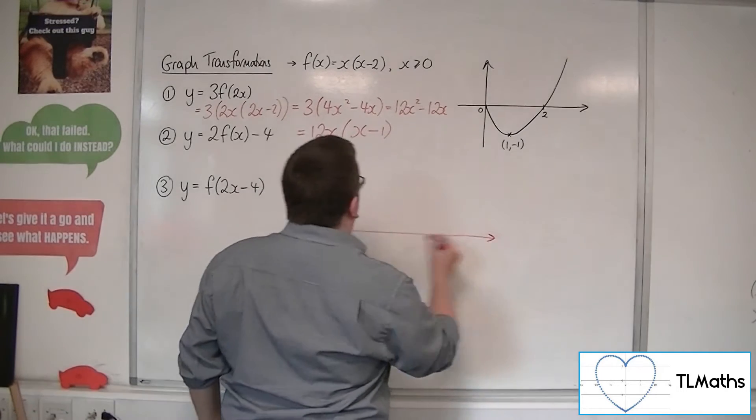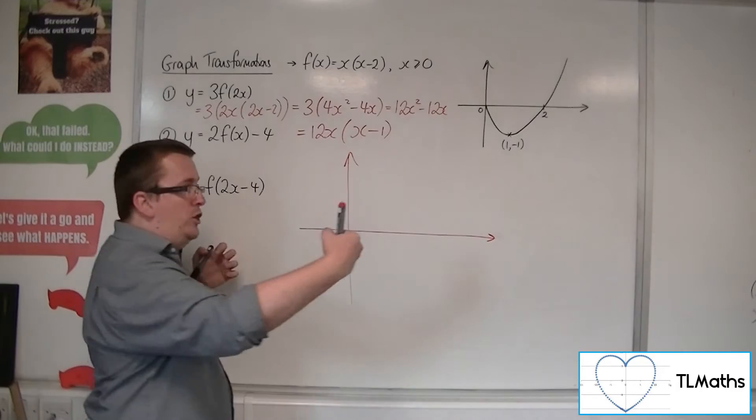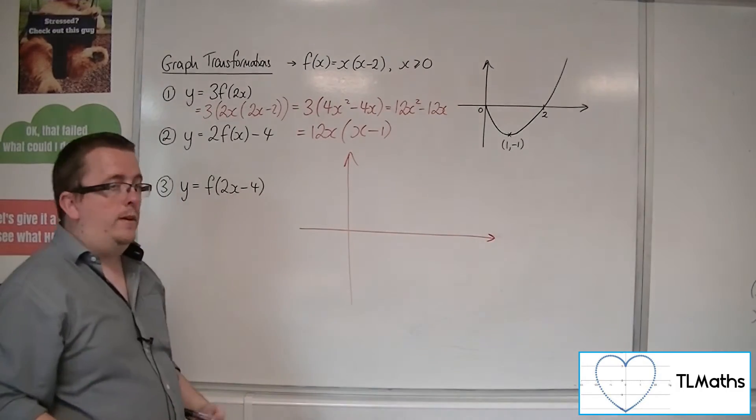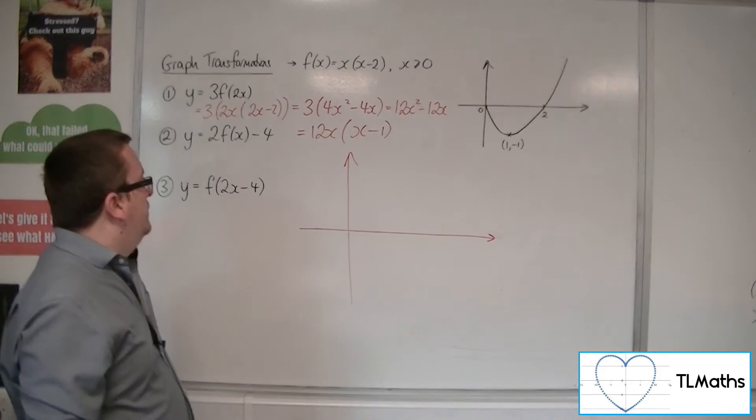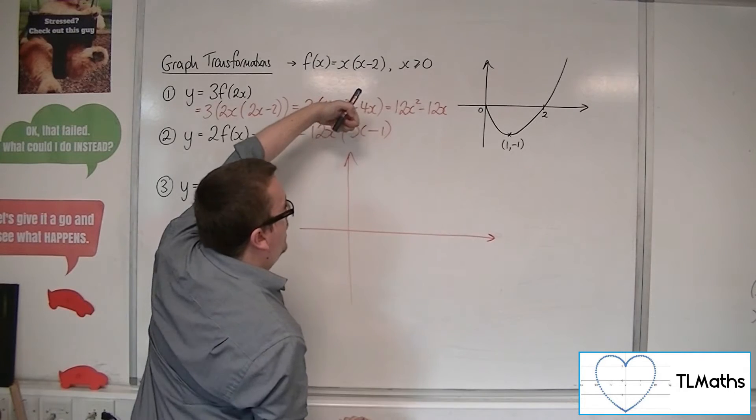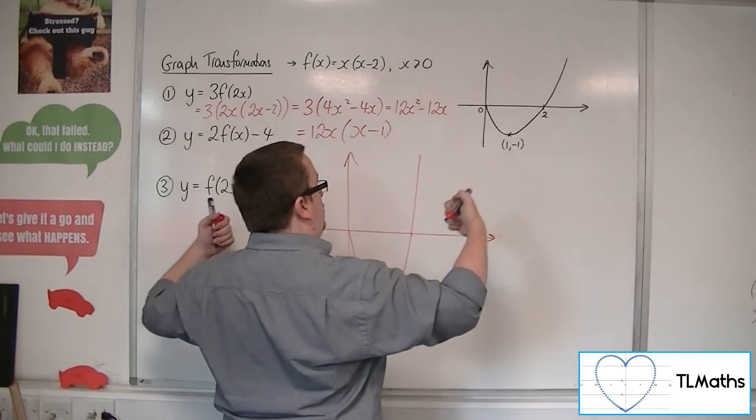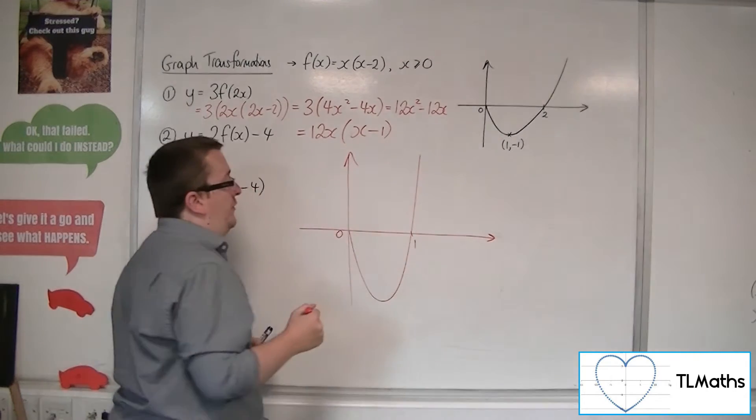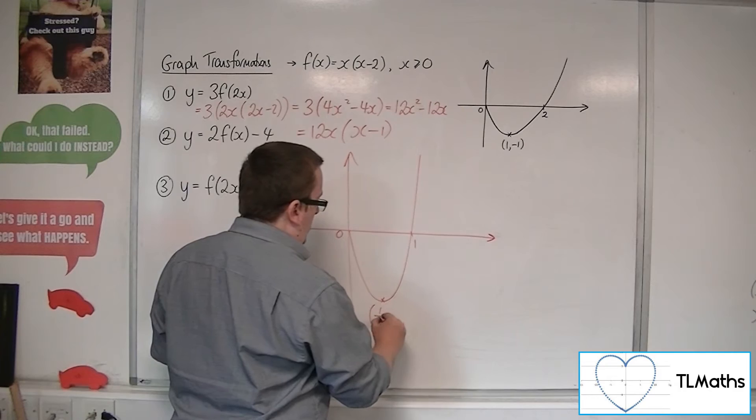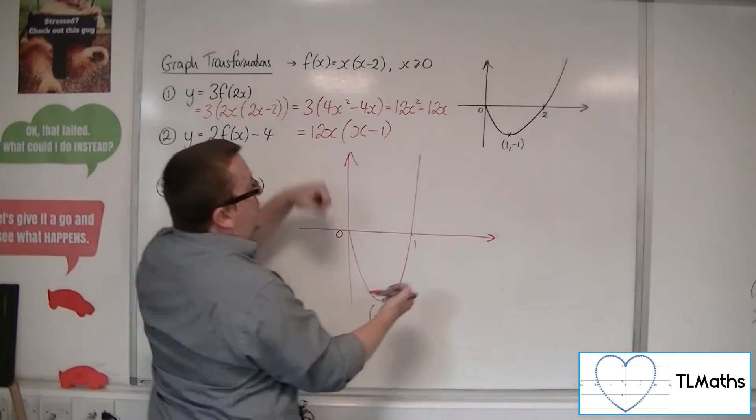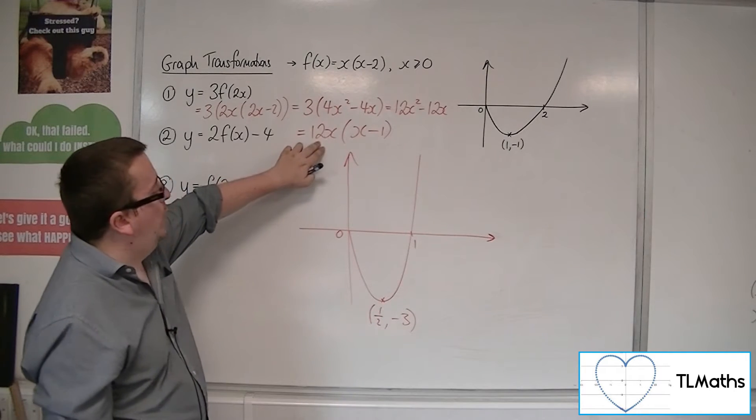Now if we think of this as a pair of transformations, we've got this f of 2x which is stretching the graph by a factor of a half in the x direction, and we've got this 3 on the outside which is stretching the graph by factor 3 in the y direction. So this curve is being stretched 3 that way and a half that way. Because it's been stretched by a half in the x direction, it'll be going through 1. 0 will stay put, but it'll be going through 1 now on the x-axis. Its vertex will be halfway between 0 and 1, so that'll be a half, but its y-coordinate will be stretched by factor 3, which will be minus 3.